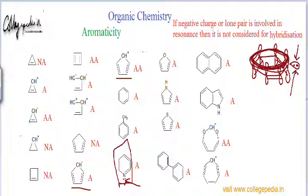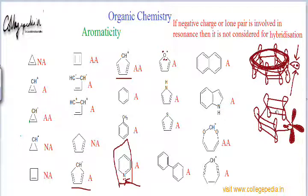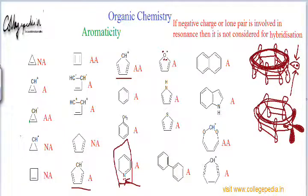The same logic applies to furan. Oxygen in furan has 2 lone pairs. If we count both lone pairs, furan would appear to have 4 + 4 = 8 pi electrons — 4 from lone pairs and 4 from the 2 pi bonds — making it seem anti-aromatic. However, in furan's orbital diagram, only one lone pair's orbital is parallel to the other p orbitals and can participate in cyclic delocalization.